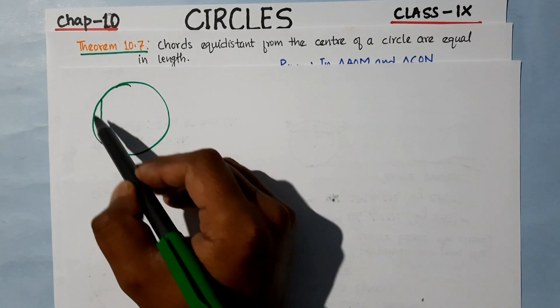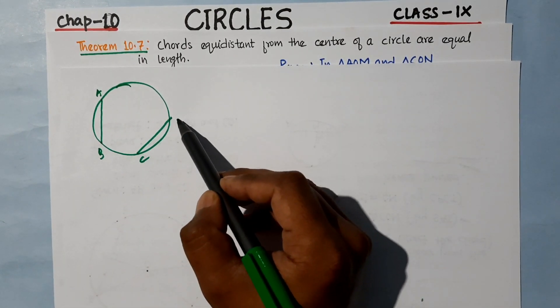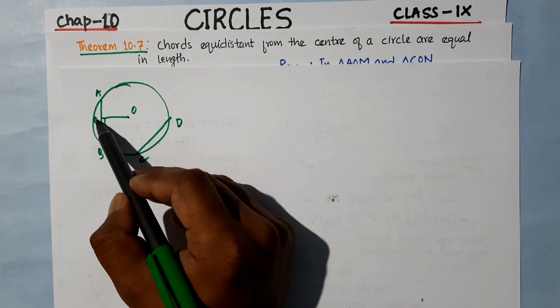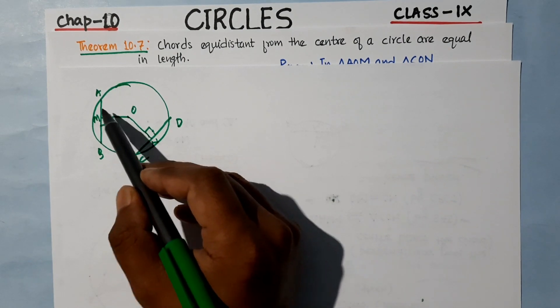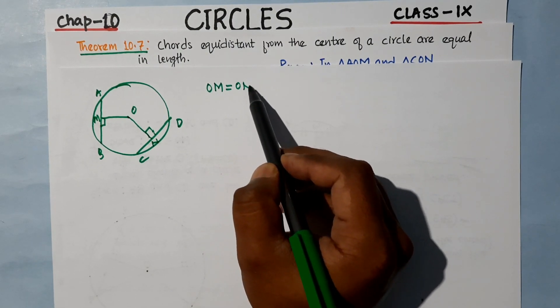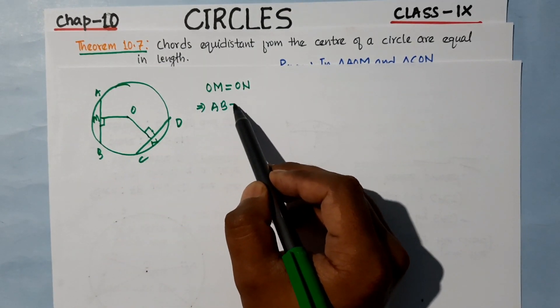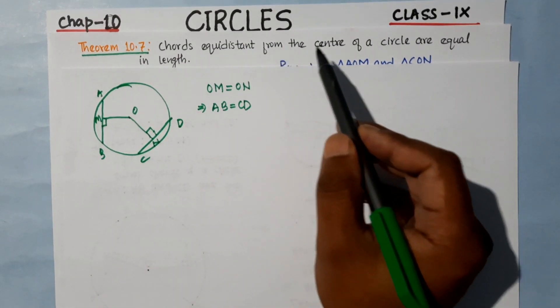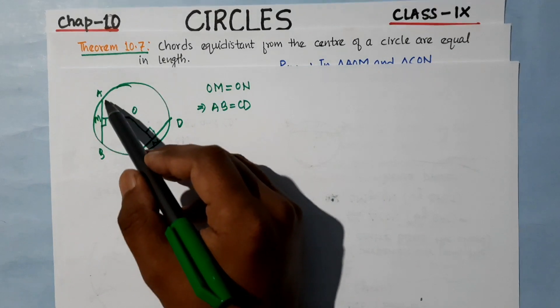We will draw a circle with chord AB and another chord CD. The distance from the center, we will call AM and the other distance we will call ON. These are chords equidistant from the center, meaning OM and ON are equal, and the chords AB and CD are equal in length.